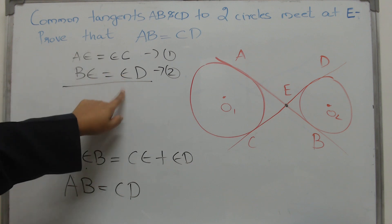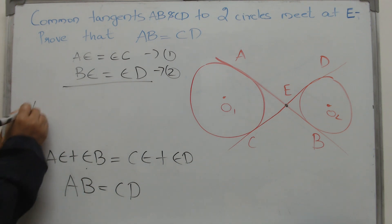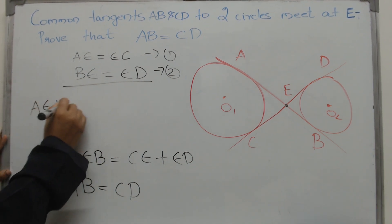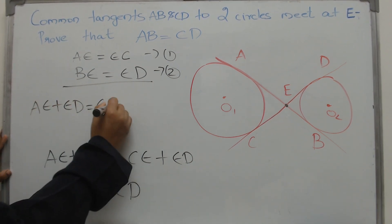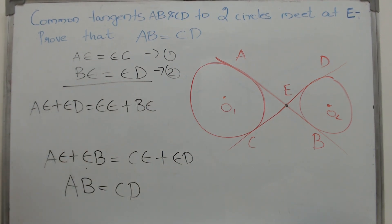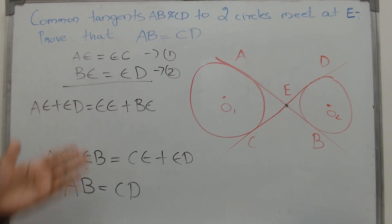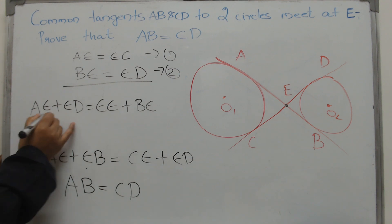If you add them like this, the equation will still hold. The equation will still be right. AE plus ED is equal to EC plus BE will still hold. But what is this? This just means 0 is equal to 0. That is actually the equation because look at this.